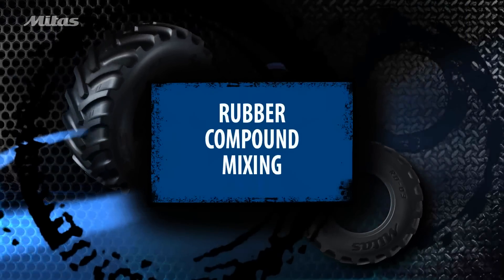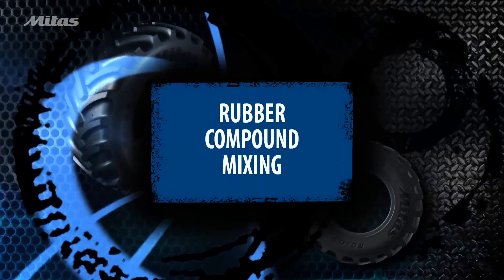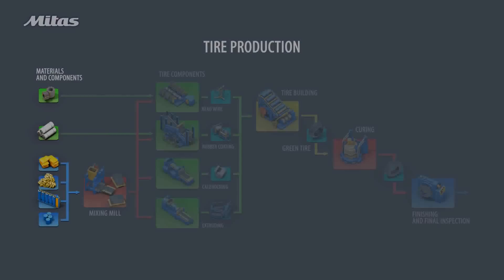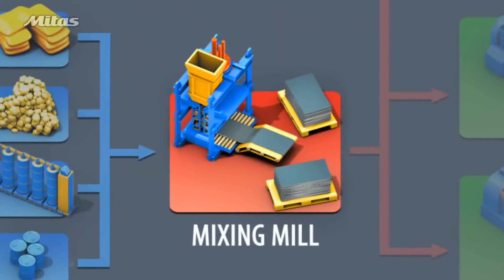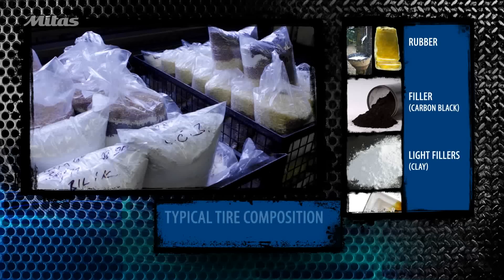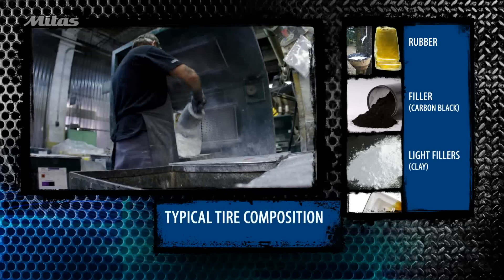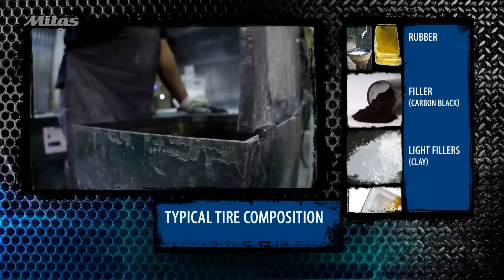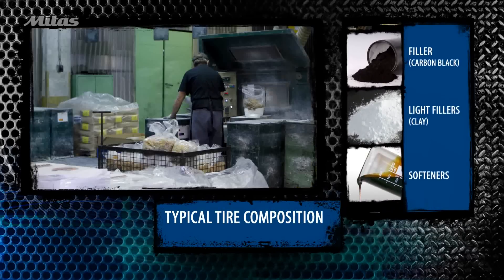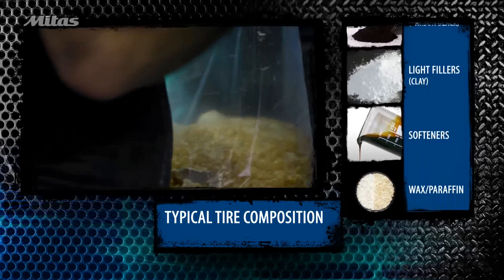The first stage of tire production is rubber compound mixing. At the rubber mill, the rubber is mixed with various materials. These include fillers, clay, and carbon black.